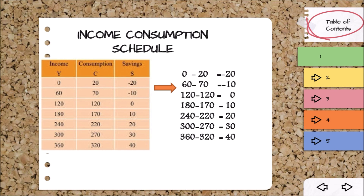As income continues to increase, reaching 360 rupees, consumption reaches 320 rupees. The saving is 360 minus 320, which equals 40 rupees. This shows that as income increases, consumption also increases, and saving grows alongside consumption.